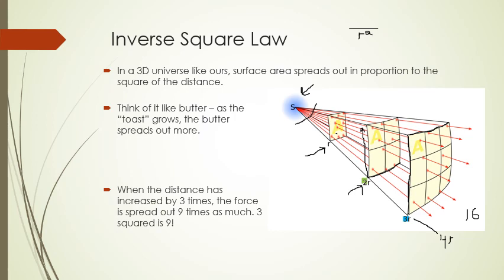So when the distance is three times greater, you now have nine boxes. At single r, those nine arrows were all in one box — nine arrows per box. At triple r, those nine arrows are spread across nine boxes — only one arrow per box, nine times less. That's the inverse square law.